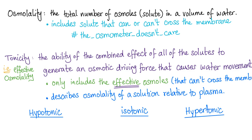Here is how you tell the story: osmolality is just the osmometer counting all of the osmols in your plasma — that's it. Tonicity depends only on the effective osmols, so it describes osmolality relative to the plasma. Therefore, fluids are either hypotonic, when their osmolality is less than that of the plasma, or isotonic, when their osmolality equals the plasma — around 290 milliosmol per liter — or hypertonic, when the osmolality of that solution is greater than the plasma.